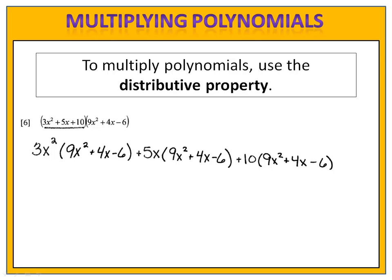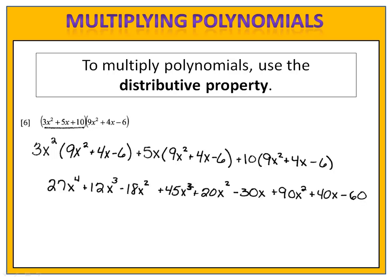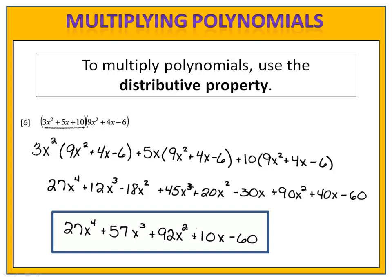We began by distributing the 3x squared, then we distributed the 5x, and finally we distributed the 10. When we do that, we ended up with 27x to the 4th plus 57x to the 3rd plus 92x squared plus 10x minus 60.